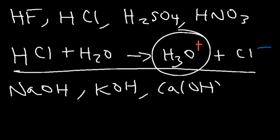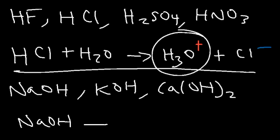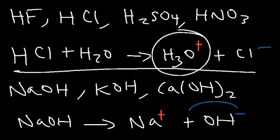Arrhenius bases include sodium hydroxide, potassium hydroxide, and calcium hydroxide. If you put sodium hydroxide in water, it dissociates into sodium ions and hydroxide ions. This makes it an Arrhenius base because it releases hydroxide ions into solution, causing the pH to increase and making the solution basic or alkaline.